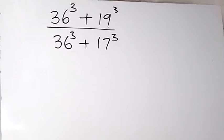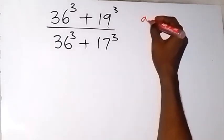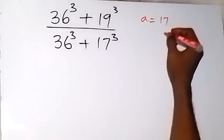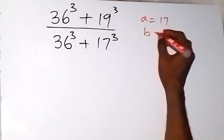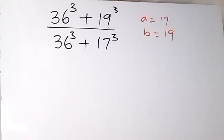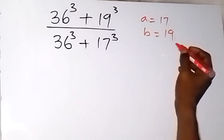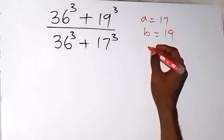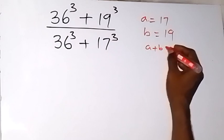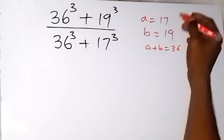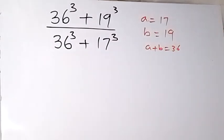Thank you for joining us. We want to solve this problem without using a calculator. If you are just joining us, subscribe to this channel for more of our videos. Now here, let us say that a equals 17 and b equals 19. When we add the two together, this gives us 36, so a plus b equals 36.